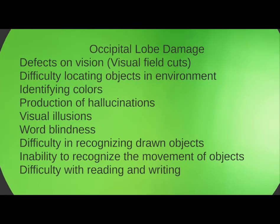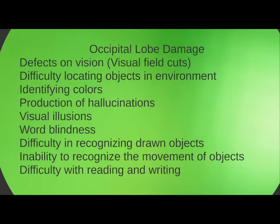The occipital lobe is much more of an input center. If you have damage here, you're going to lose some visual fields, have difficulty locating objects in the environment, difficulty identifying colors, and may experience hallucinations due to inadequate visual processing. You'll also have visual illusions, word blindness, and difficulty recognizing drawn objects. Central blindness is a condition where occipital lobe damage means all receptors are working and the optic chiasm is intact, but when information arrives at the occipital lobe processing center, there is no ability to process it.